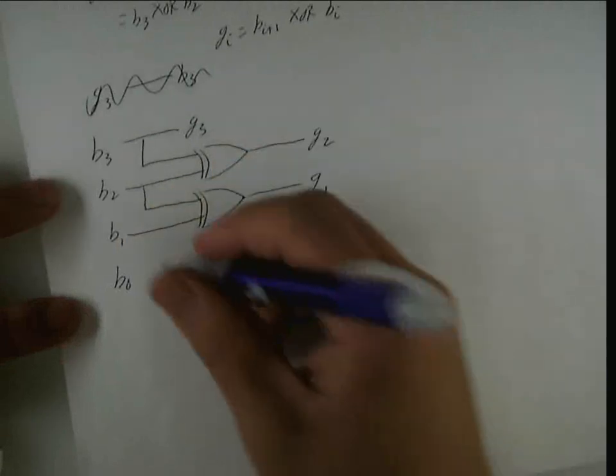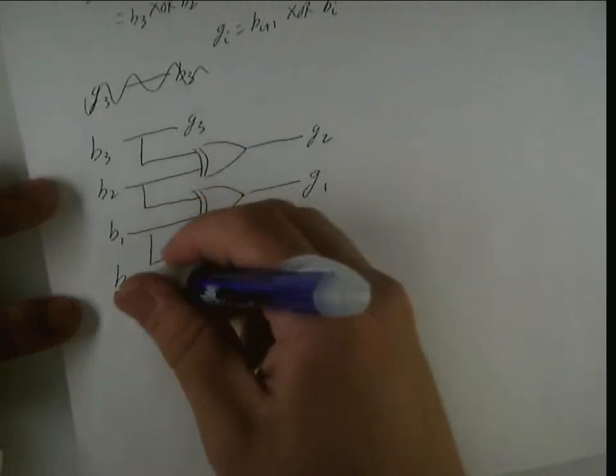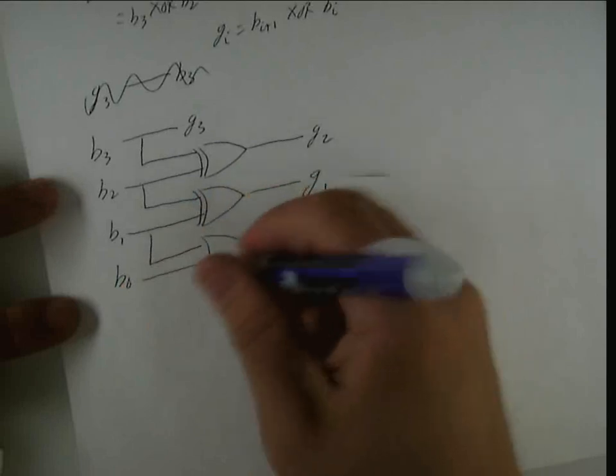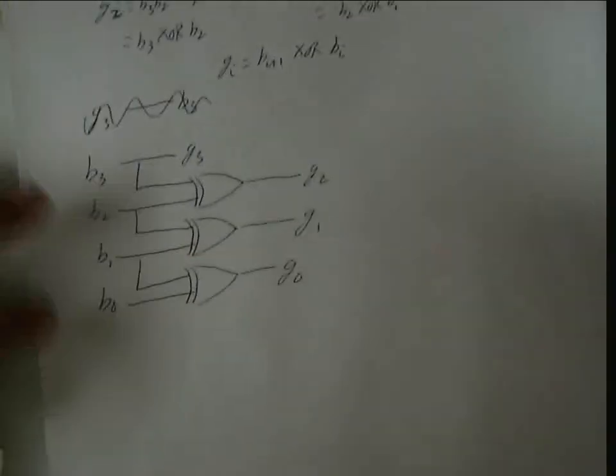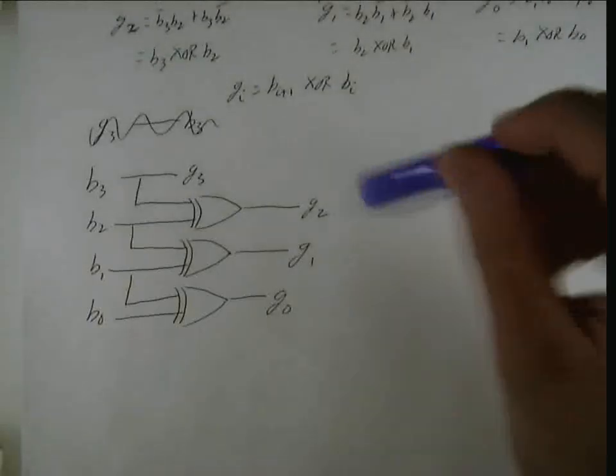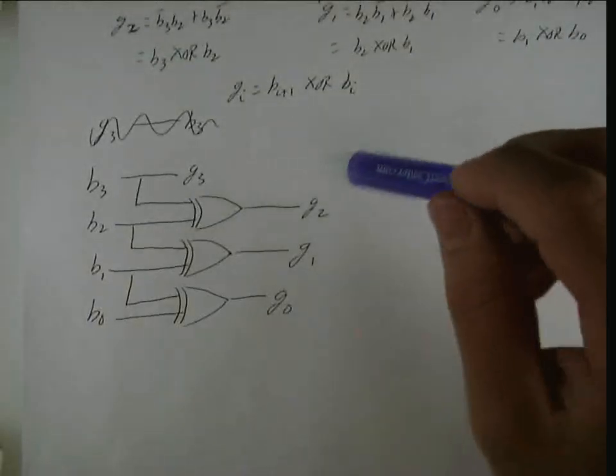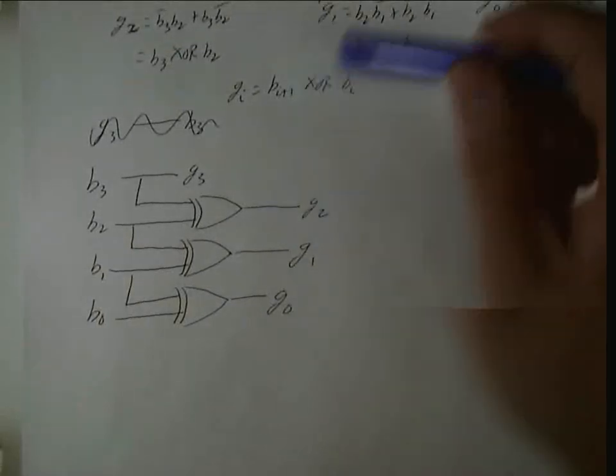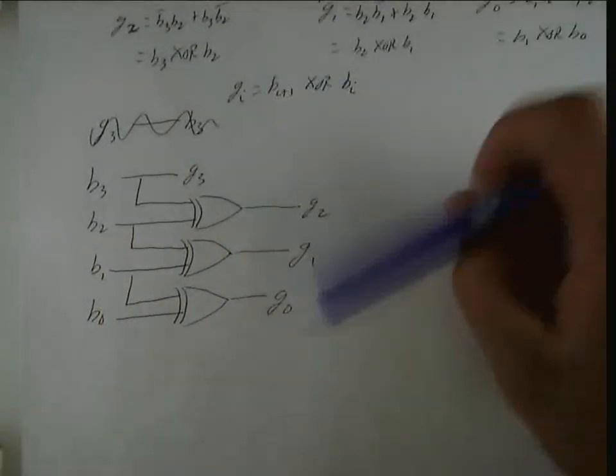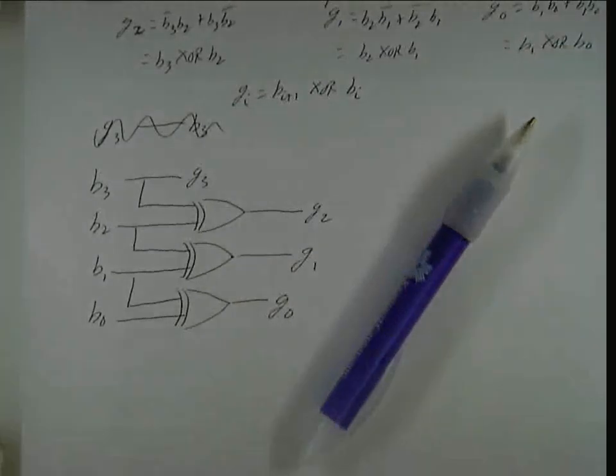And B1 and B0 will go into an XOR together for G0. And that is the 4-bit binary code to gray code converter. And you can just keep duplicating this all the way up to create any number of bits, binary code to gray code.